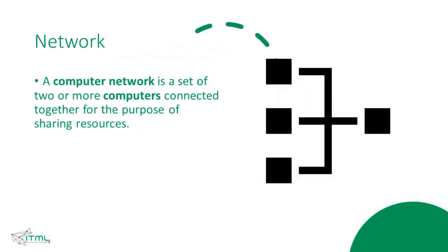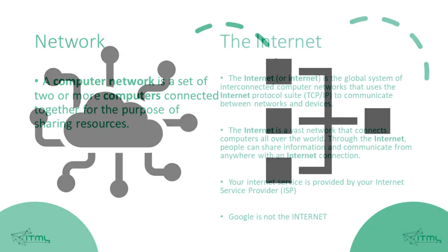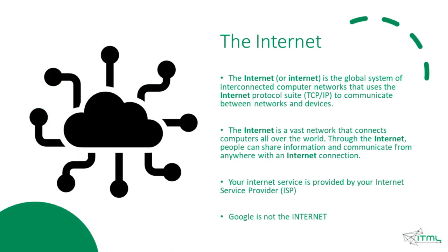Let's see some very basic terms. A network, or computer network, is a set of two or more computers connected together for the purpose of sharing resources. The internet that everyone knows is not just a device — it is a vast network that connects computers all over the world. We call the internet the global system of interconnected computer networks that use the internet protocol suite to communicate between networks and devices.